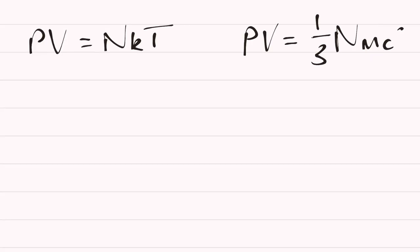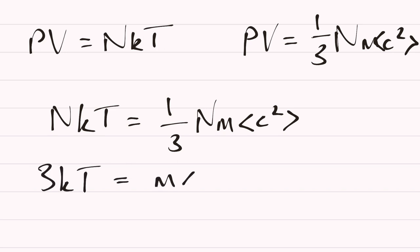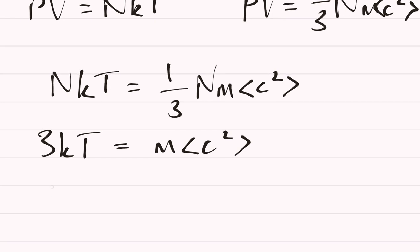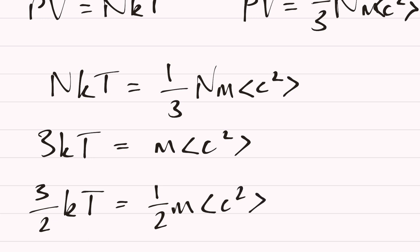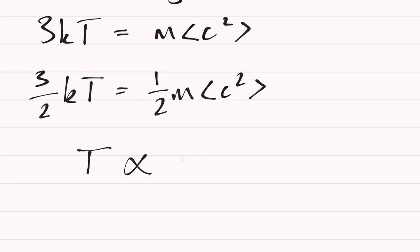Our expression was PV = ⅓Nmc². Setting NkT equal to ⅓Nmc², we can cancel the N's and move the 3 across to get 3kT = mc². Dividing everything by 2 gives 3/2 kT = ½mc². And ½mc² is kinetic energy — so we have shown that temperature is proportional to kinetic energy.